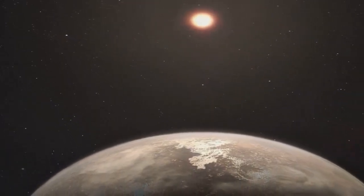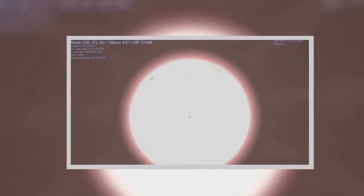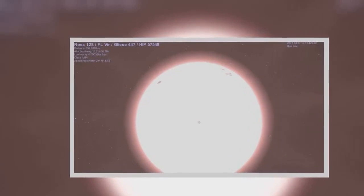Astronomers often talk about the habitable zone around a star—it's the range of distances where temperatures allow water, essential for life as we know it, to remain liquid on the surface of a planet.